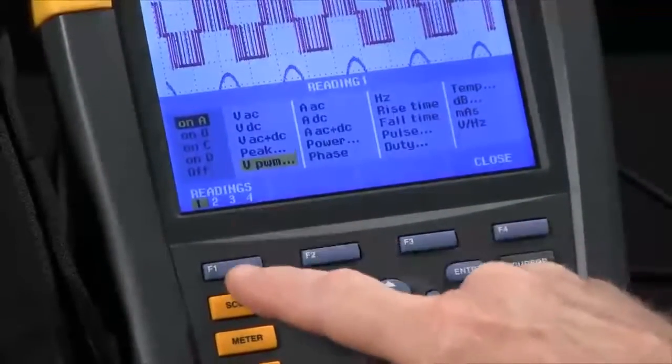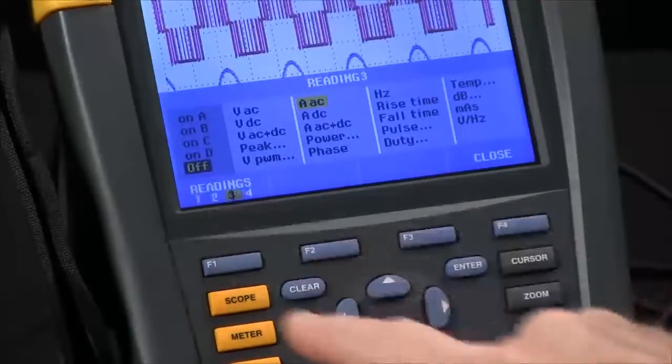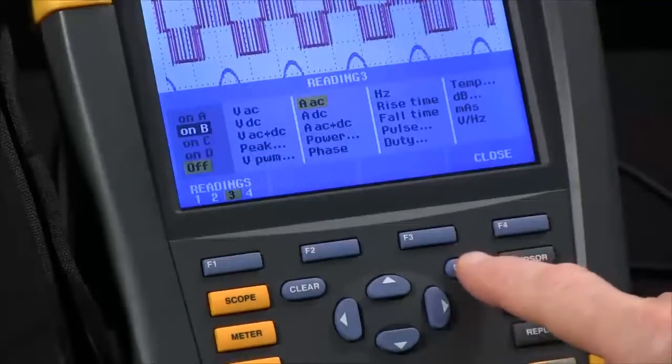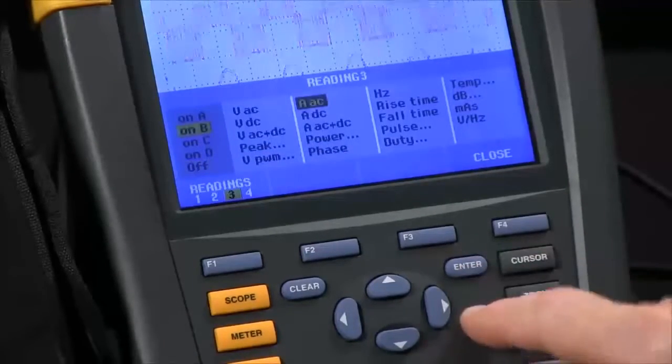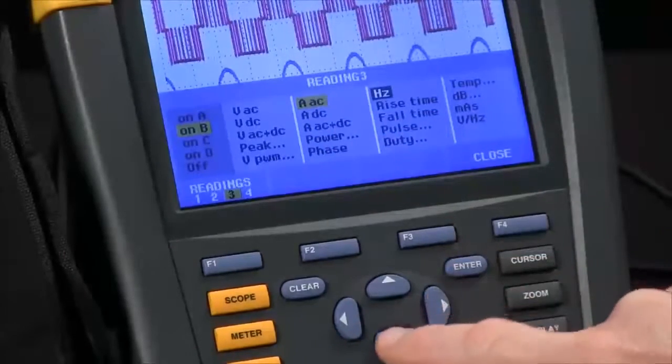We will highlight the number three with F1. Right now it's off. We can arrow up, put it on channel B, hit the Enter key, and then change that to read whatever we like.